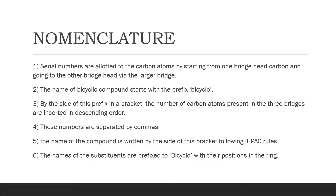Next to the prefix, we attach a bracket in which we write the number of carbon atoms present in the three bridges in descending order. So we write down the number of carbon atoms present in each bridge between the two common carbon atoms from highest to lowest, separated by commas. The name of the compound is written beside this bracket following the IUPAC name — the root word like hept, oct, non, hex, etc. — based on the total number of carbon atoms in the parent chain.